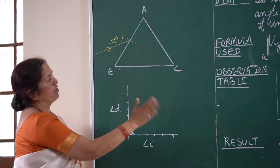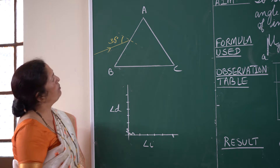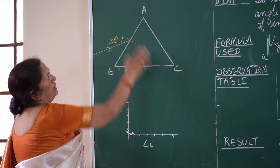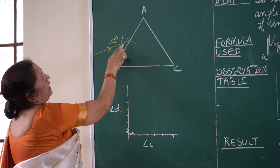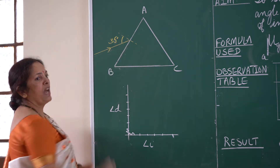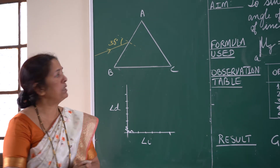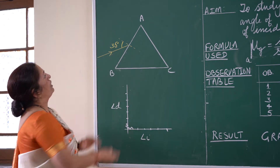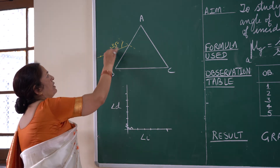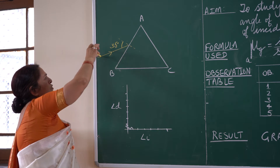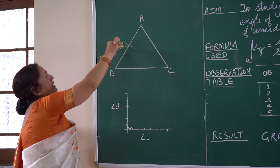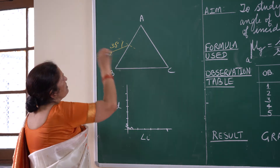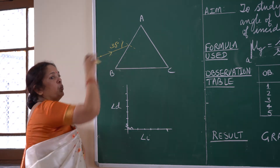Then draw a ray as incident ray making an angle of 35 degrees with the normal for the first reading. For the second reading you will change this angle to 40 degrees and so on. On this incident ray you are going to put one pin, the second pin, and the third pin — all three pins vertically erect.